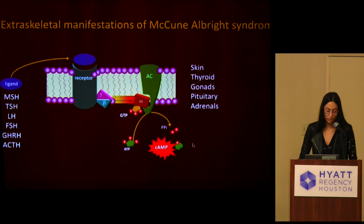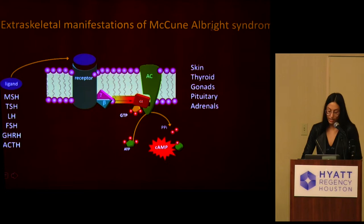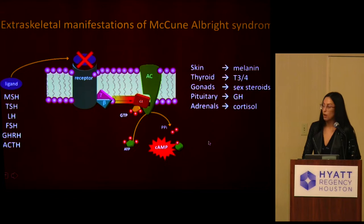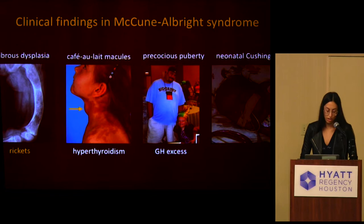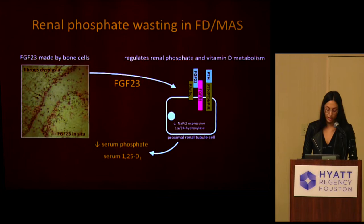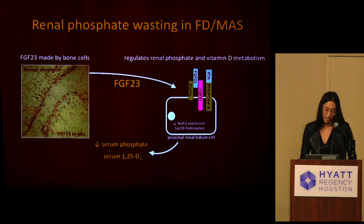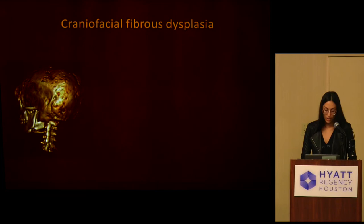Several of the hypothalamic-pituitary axis hormones signal through these G-protein coupled receptors. When you have a mutation that causes the constitutive activation of these target tissues, you get overproduction of their downstream products. Clinically we observe cafe au lait macules of the skin, hyperthyroidism, precocious puberty, growth hormone excess, and neonatal Cushing's. Also very commonly we observe rickets, due to overproduction of the hormone FGF23. FGF23 is normally made by osteocytes and is a potent regulator of phosphate and vitamin D metabolism. In FD, the mutant cells overproduce this hormone, resulting in renal phosphate wasting, hypophosphatemia, and vitamin D deficiency.